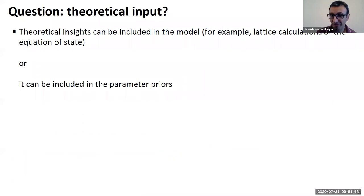I think I've already mentioned this, but let me highlight again that theoretical information is and can be included systematically in Bayesian parameter estimation. It can be done by simple inclusion in the model. So if you're really certain about some ingredients in your model,